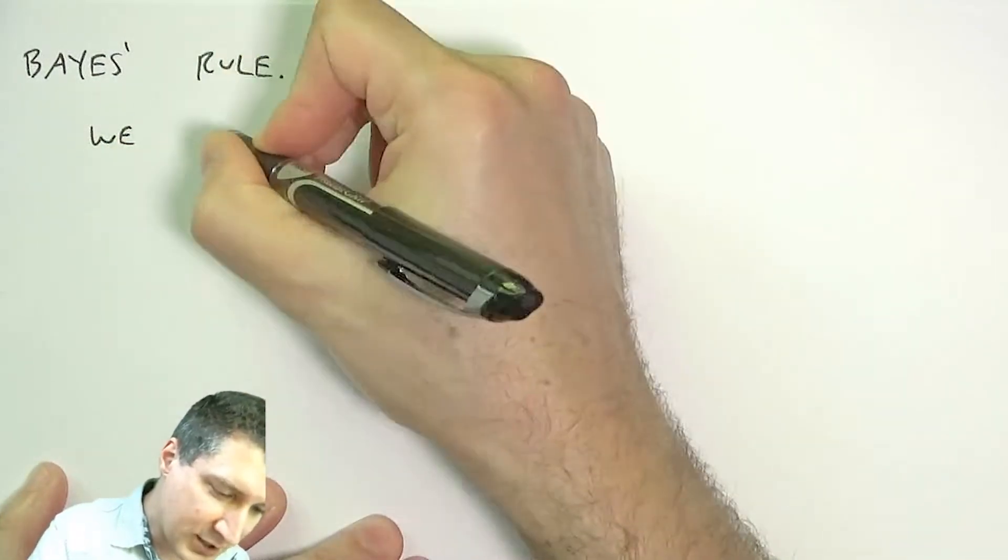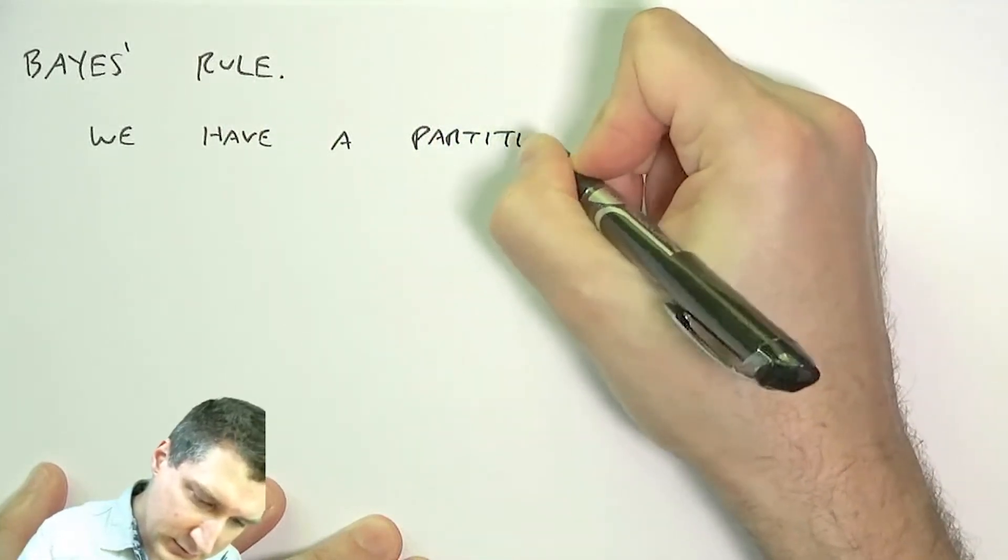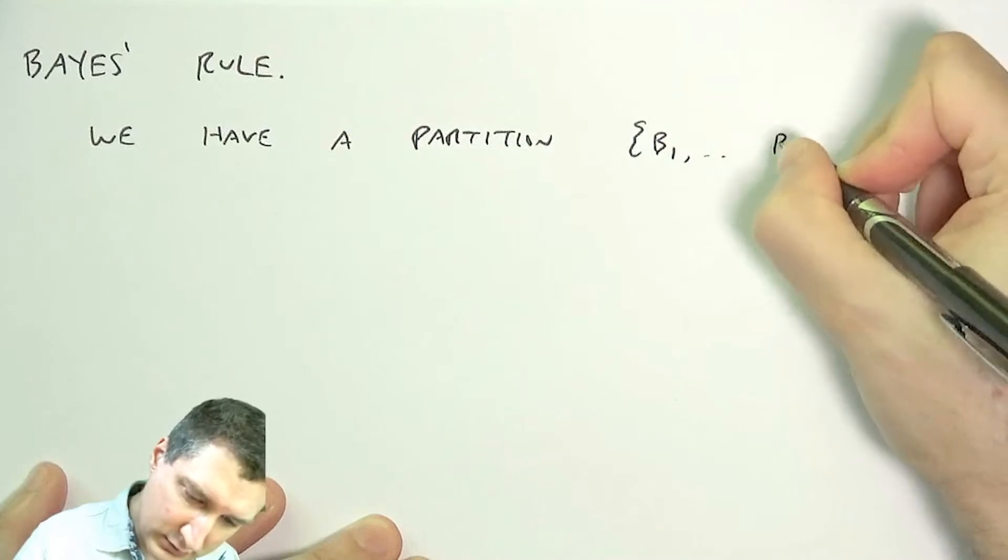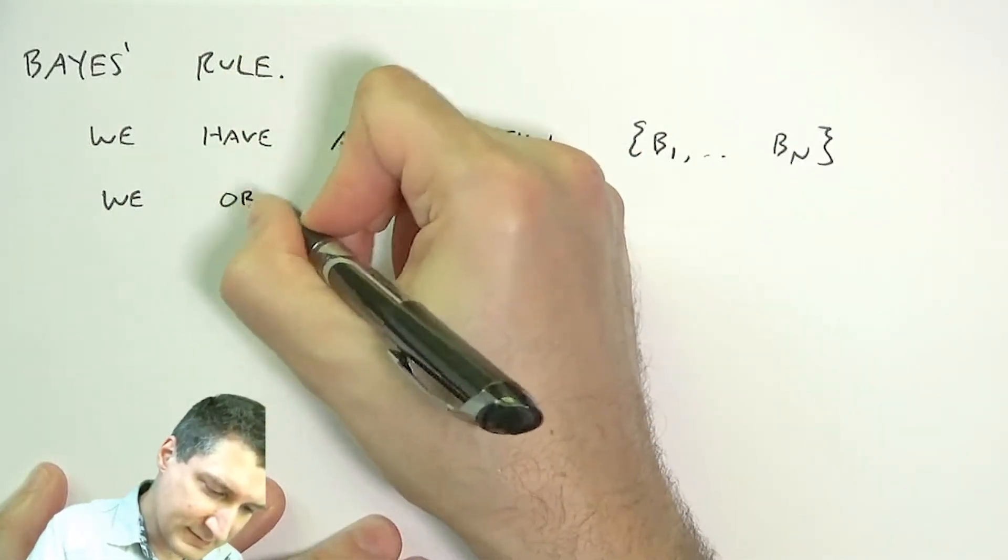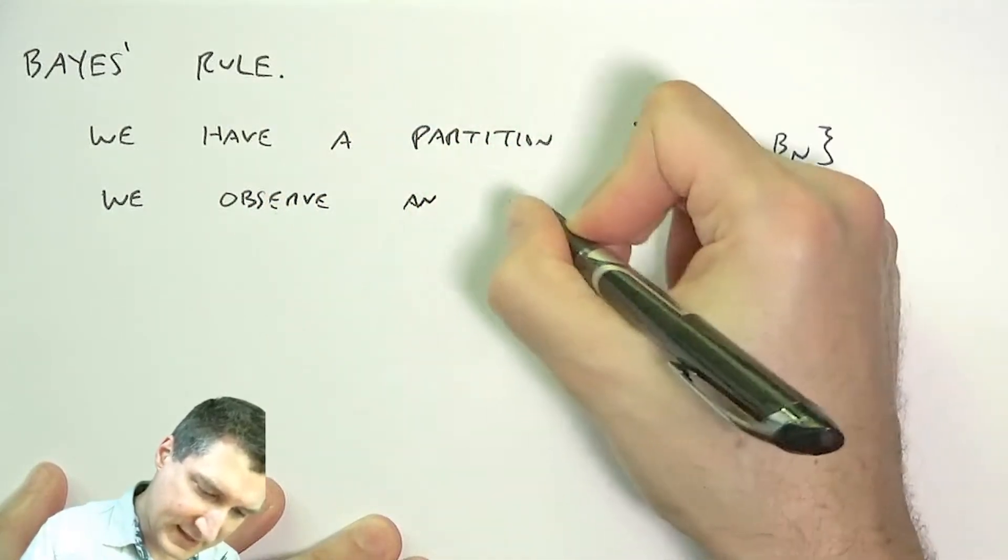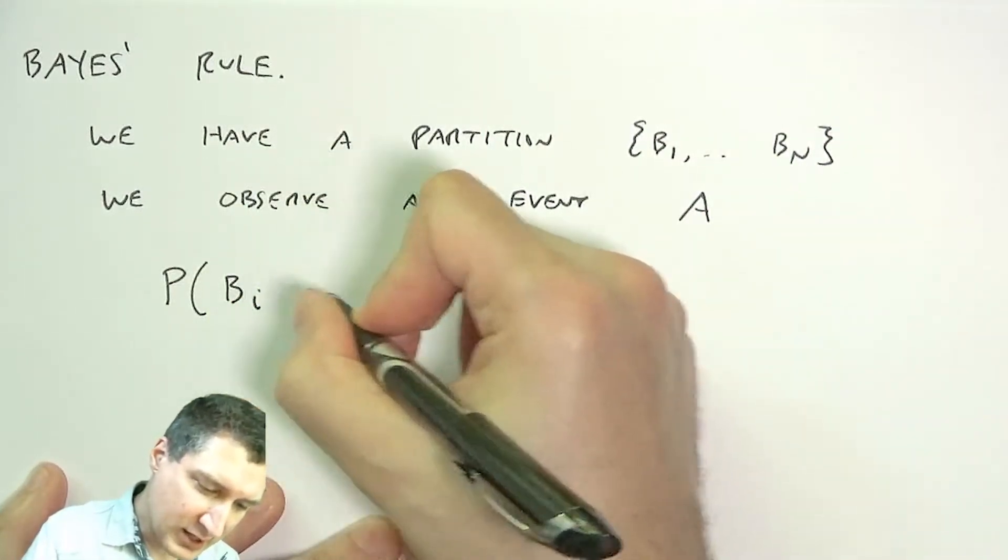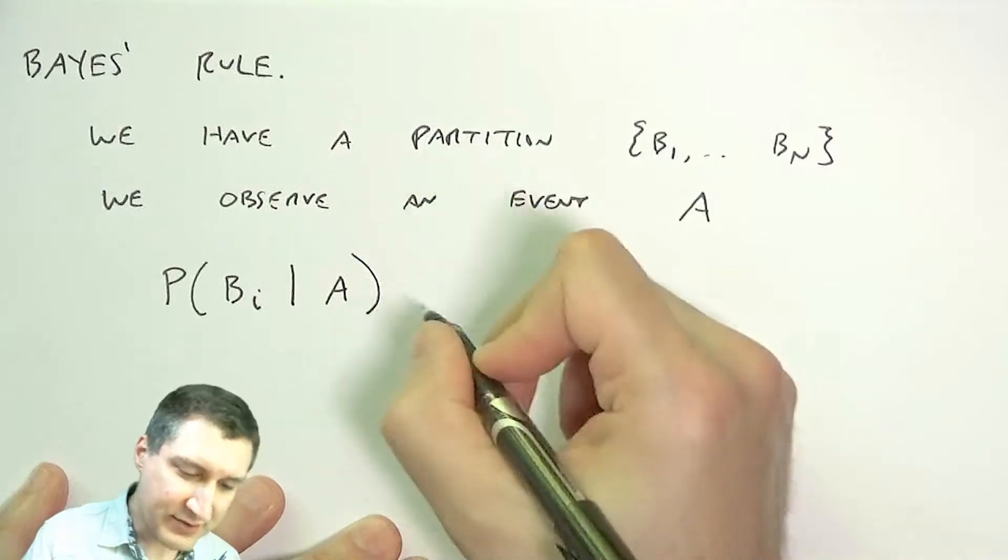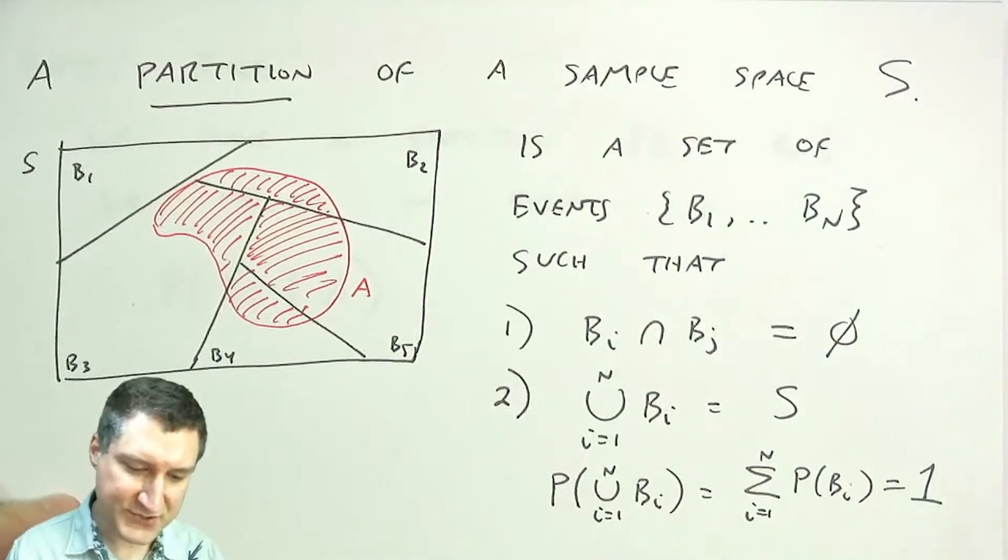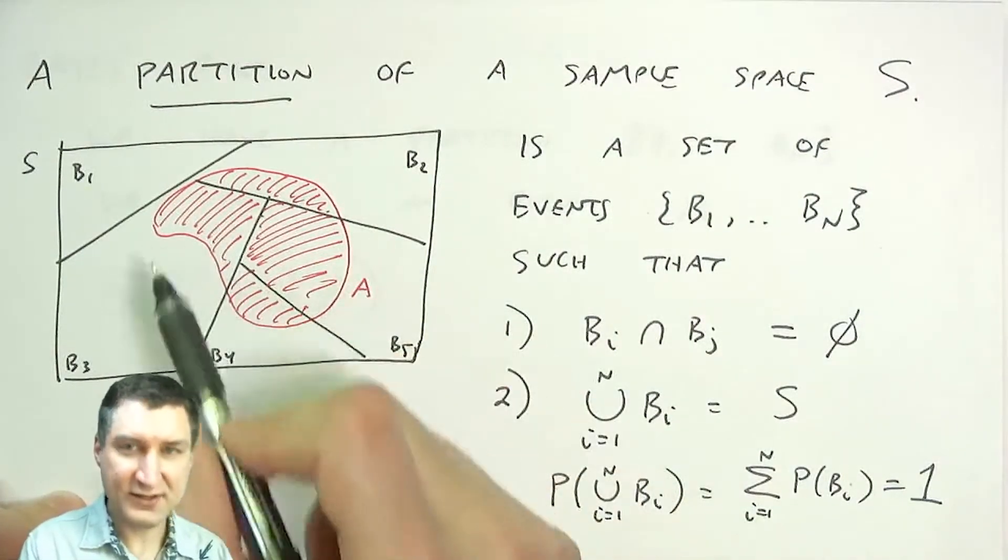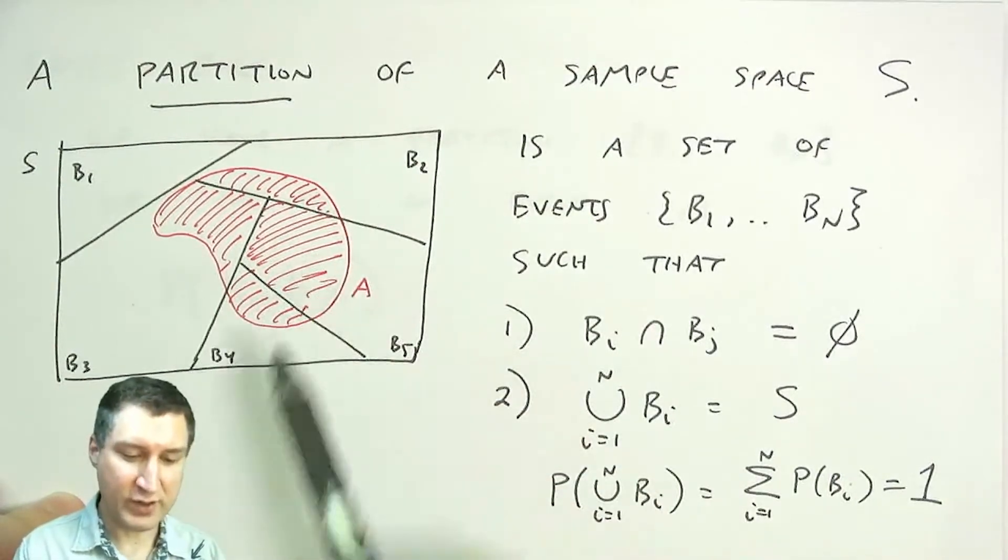So we have a partition of the sample space and we observe an event A and we want to compute what is the probability of each of these partitions now that we've seen A. So one way to think about this is that here's this picture of partitions from the previous lecture. So I see this red event A occurred. How does that change my probabilities that all these B1 through B5 occurred?